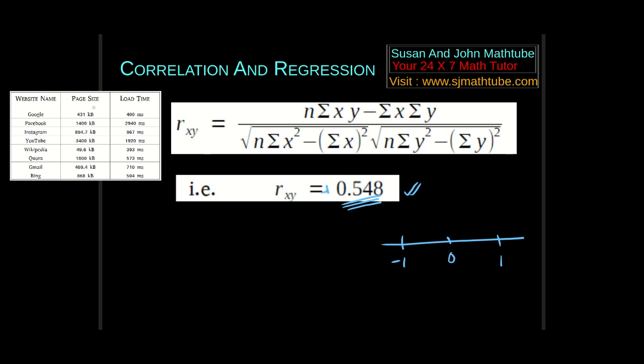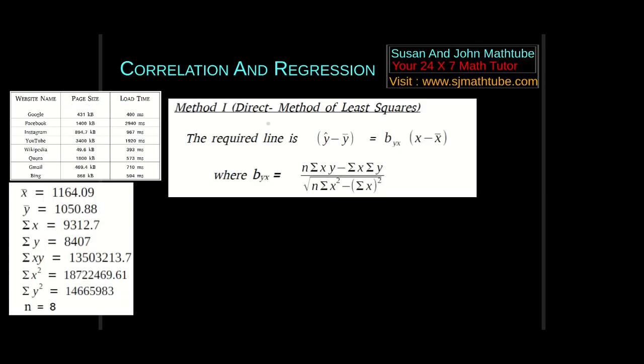The first thing I observe is it is positive. Positive means there is a connection between the page size and the loading time. But it is not 1, so it is not perfect. 1 means loading time is completely controlled by the page size. So there is not 100% control but there is a positive influence. We get the degree and direction. The extent of relation is 0.542 and it is positive.